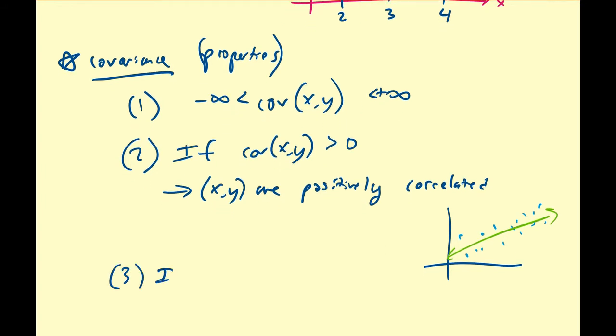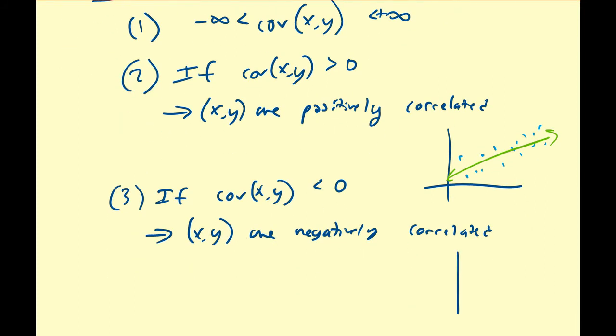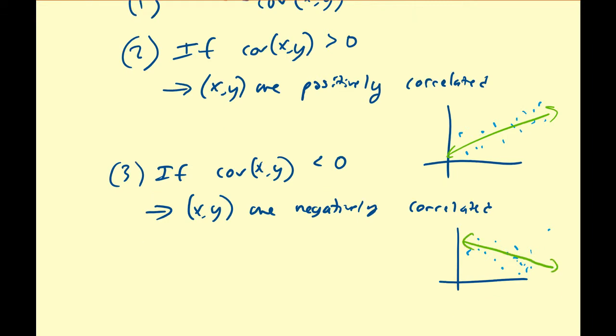Thirdly, if the covariance between X and Y is less than zero, then that's going to imply that X and Y are negatively correlated. So that means if you plot your values again, even if there is some positive value here, most of the values are going to be downward sloping.